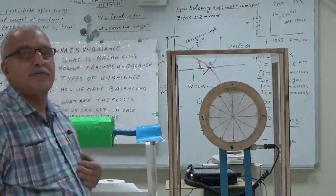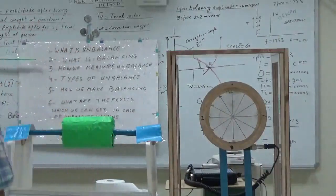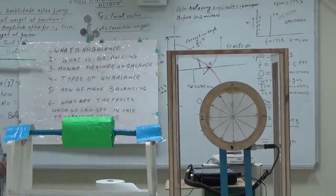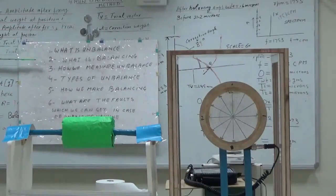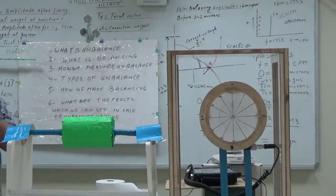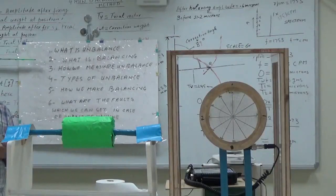Or technically speaking, the mass center line and the rotating center line are not the same. So what is the mass center? The mass center is that point where all the weight of the object is acting.